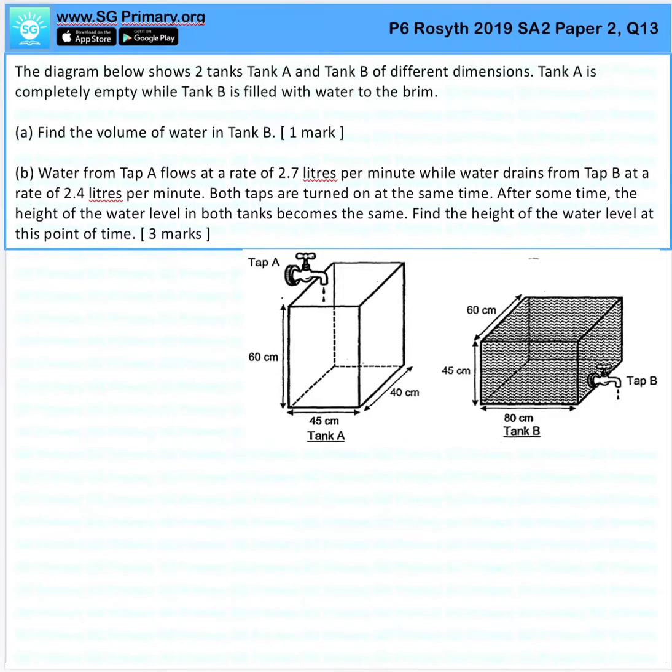Question 13. The diagram below shows two tanks, tank A and tank B of different dimensions. Tank A is completely empty while tank B is filled with water to the brim.